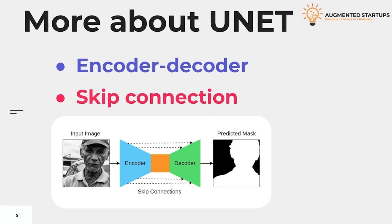Another important feature of U-Net is the use of skip connections. A skip connection, as the name suggests, skips some of the layers in the neural network and feeds the output of one layer as the input to the next layers. If you look closely at this figure, you will be able to see the arrows representing the skip connection process. This process helps to transfer selected features directly from the encoder to the decoder part of the network, which helps the decoder to generate a better segmentation mask.